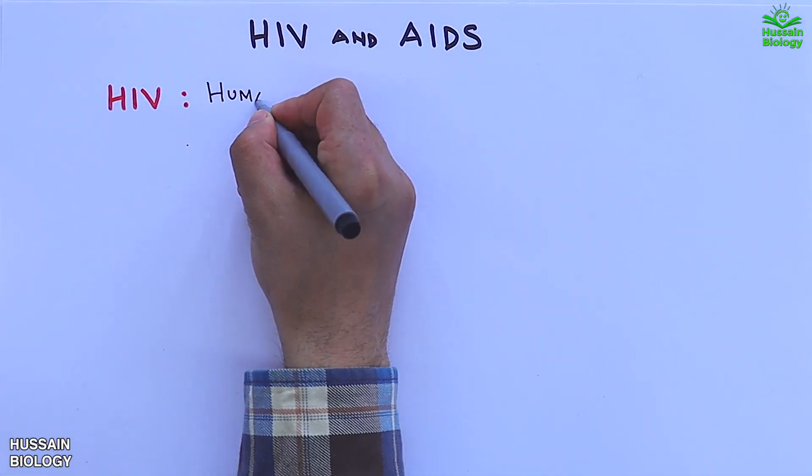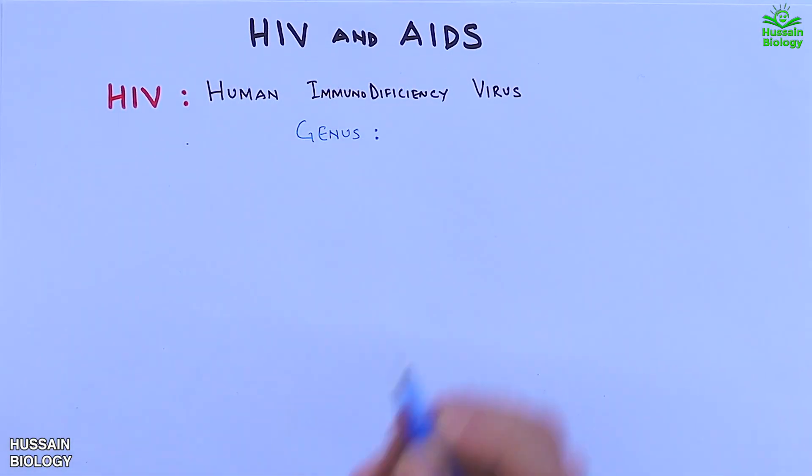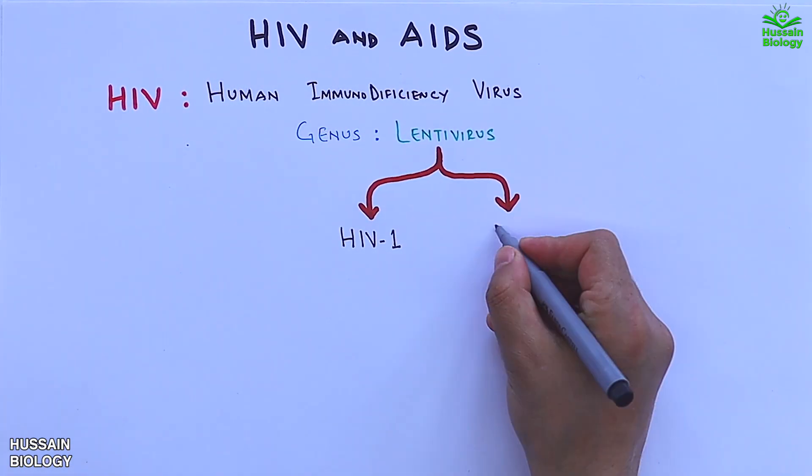In this video we will be discussing HIV and AIDS. HIV is human immunodeficiency virus from the genus Lentivirus, which includes two types of strains: HIV-1 and HIV-2.